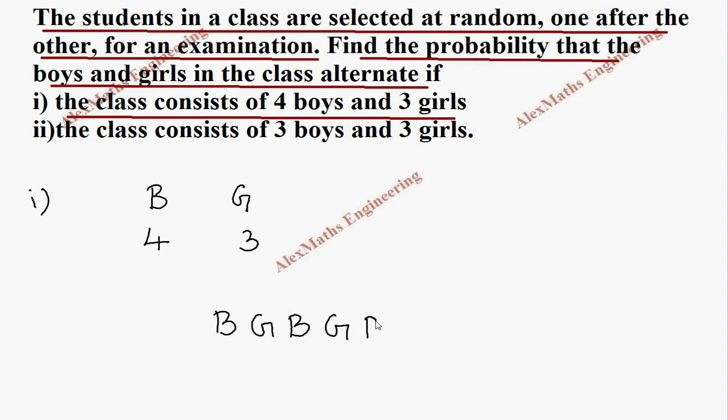So first we have to select boy, then we have to select a girl, then boy, then girl, then boy, then girl, and finally boy. If we selected this order as per the question, we are selecting the students at random one after the other and boys and girls alternate.